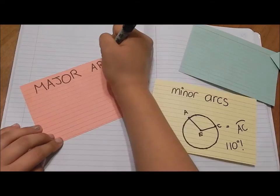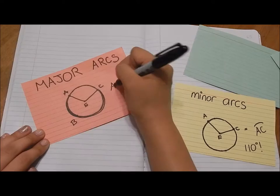Next arc is major — do you believe? If the measure passes 180 degrees, to name it, say arc ABC; this one is 250 degrees.